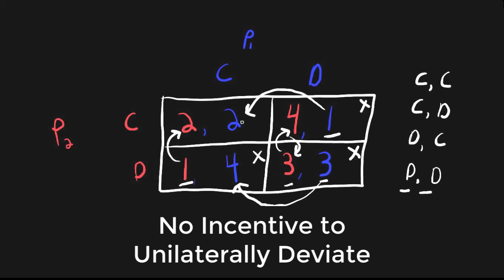Even though this is the only one left, I haven't said there is always a Nash equilibrium, so we still have to check whether confess, confess is a Nash equilibrium. From the point of view of player two — if they're both confessing, does player two have an incentive to switch to don't confess? If he switches, he goes from two to one, but he doesn't want that. So player two has no incentive to unilaterally deviate. How about player one? Given that player two is playing confess, does player one have an incentive to switch from confess to don't confess? If player one switches, instead of getting a reward of two he gets a reward of one. So player one has no incentive to deviate. At confess, confess, no player has an incentive to unilaterally deviate.